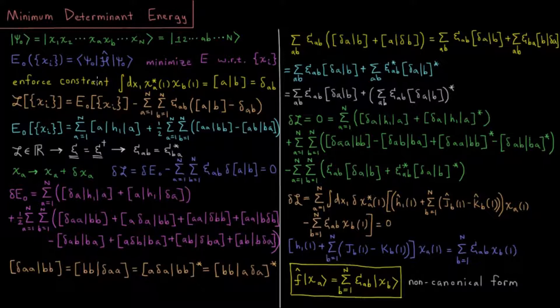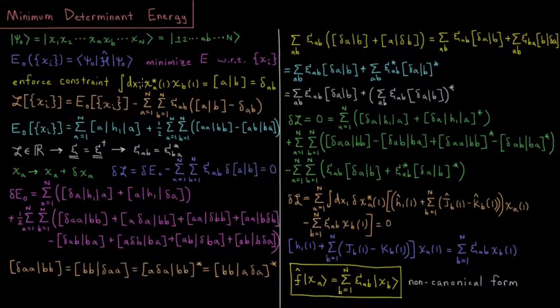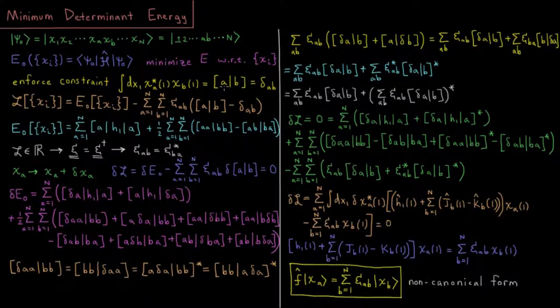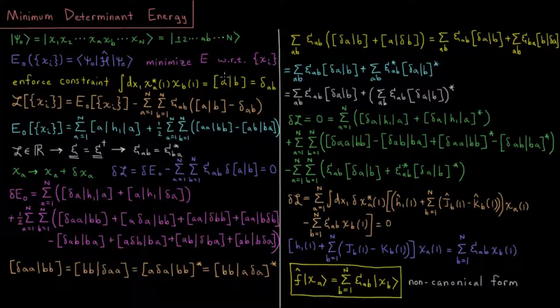We will enforce a constraint as we deviate away from that. The integral over the coordinates of electron one of the overlap of spin orbital a and spin orbital b, chi star a chi b, complex conjugate of spin orbital a, is going to equal this chemist notation Dirac integral a b. Notice I'm using square brackets for the chemist notation. That doesn't matter yet for the one electron integrals, but it will matter for the two electron integrals. If they are orthonormal, that means they are both orthogonal, so zero when a does not equal b, and one when a equals b, which can be expressed in terms of the Kronecker delta.